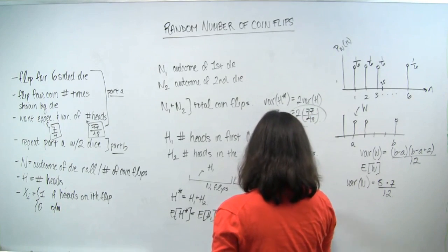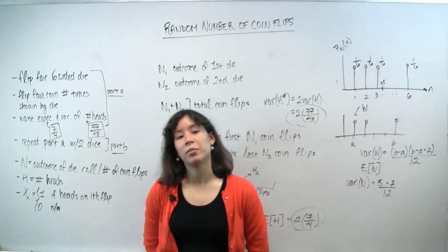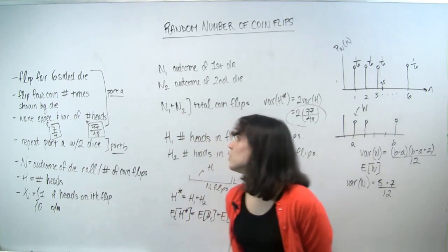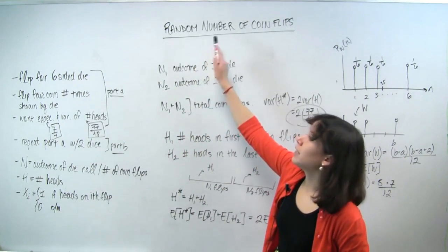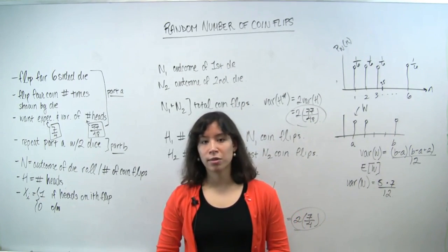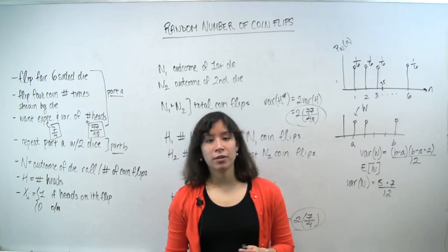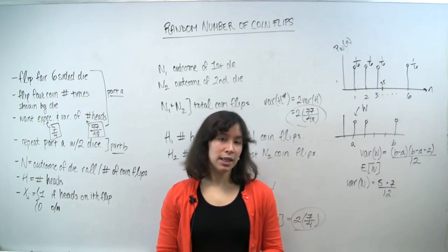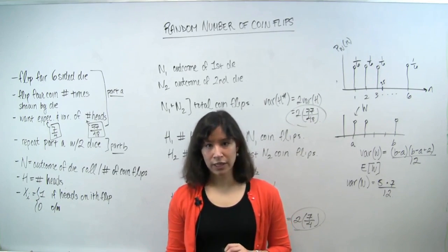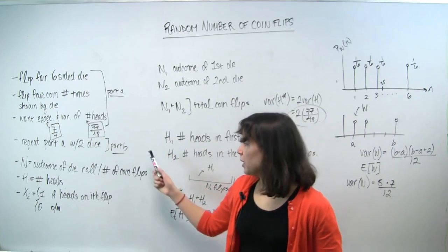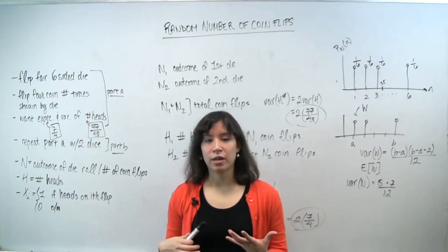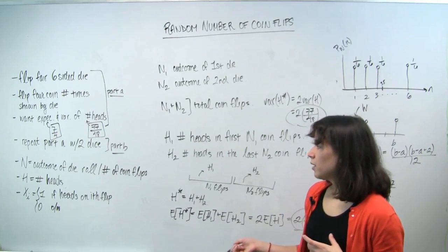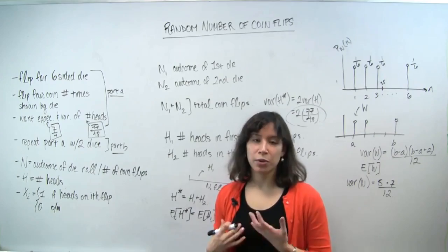The succinct answer to Part B is that both the mean and the variance double from Part A. To summarize: we saw how to handle a random number of random variables by conditioning on N and using iterated expectation for the mean and law of total variance for the variance. In Part B, we cleverly reinterpreted the experiment as two independent trials of Part A, so both the mean and variance simply double.